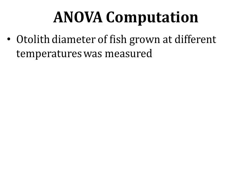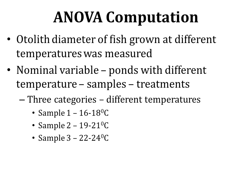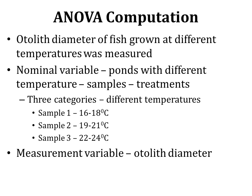In today's lecture we are going to have another exercise of one-way ANOVA, taking the example from fish. The otolith diameter of fish grown at different temperatures was measured. The nominal variable is ponds with different temperature values — these are our treatments with three categories: sample 1 is 16–18°C, sample 2 is 19–21°C, and sample 3 is 22–24°C. The measurement variable is the otolith diameter.